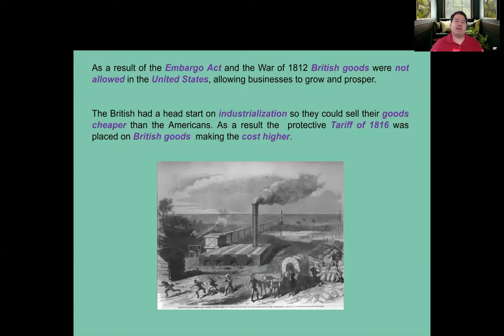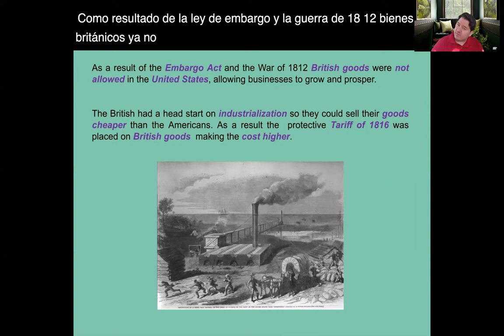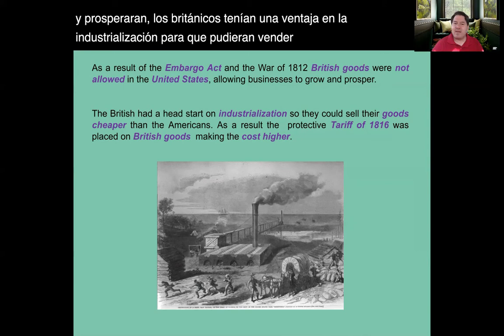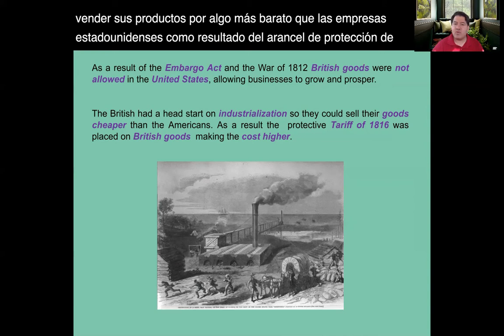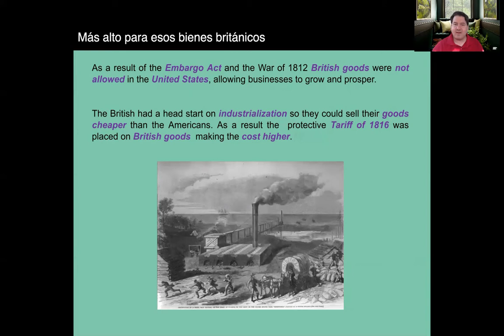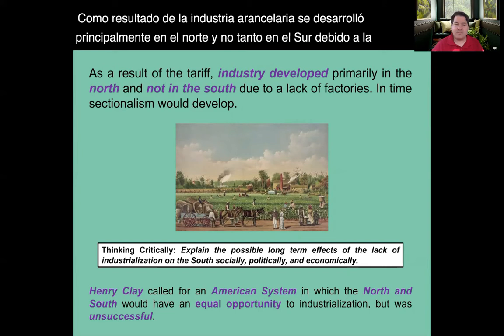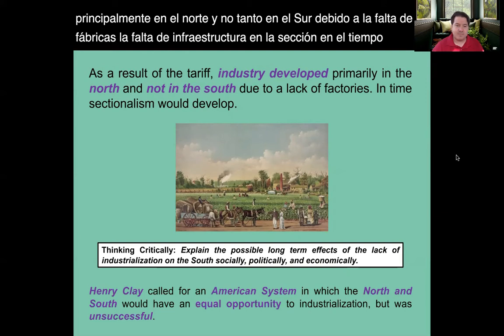As a result of the Embargo Act and the War of 1812, British goods were no longer allowed in the United States, allowing U.S. businesses to grow and prosper. The British had a head start on industrialization, so they could sell their goods cheaper than American companies could. As a result, the Protective Tariff of 1816 was placed on British goods to make costs higher and allow American companies to be more competitive. Industry developed primarily in the North and not so much in the South due to the lack of factories and infrastructure, and in time, sectionalism would develop.